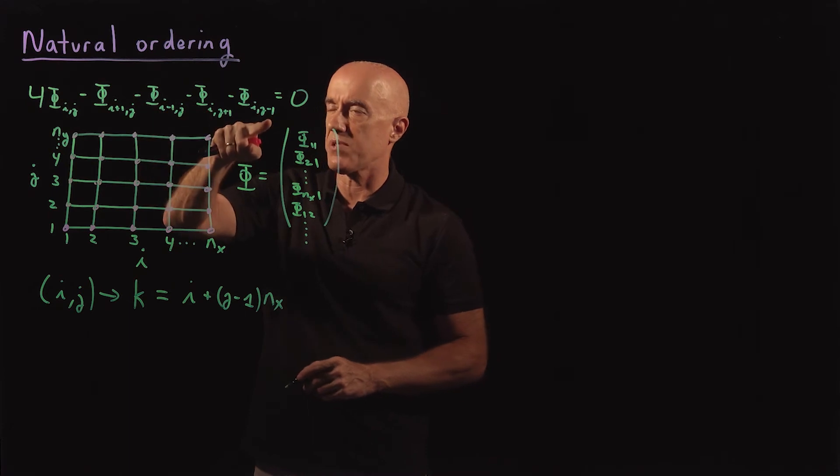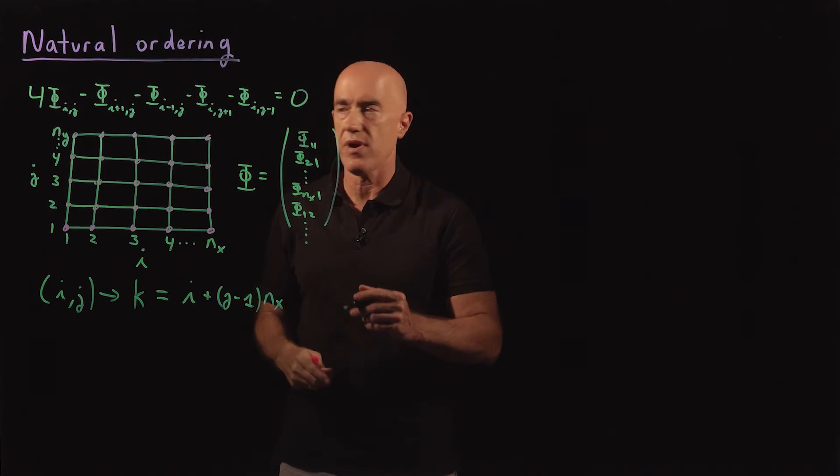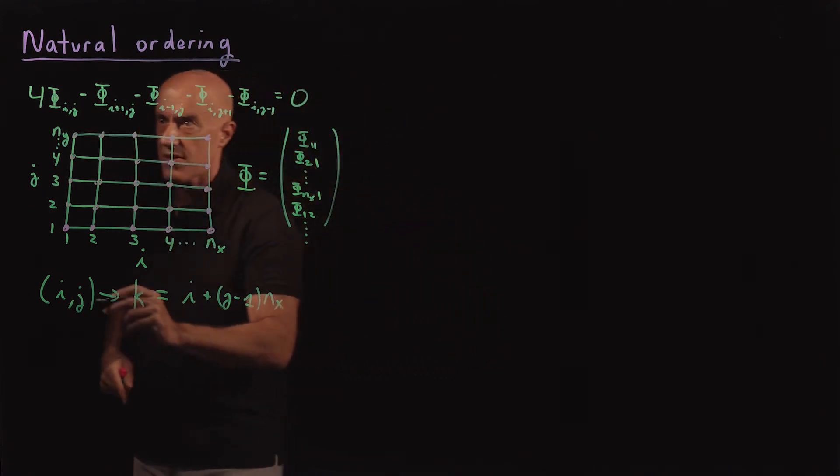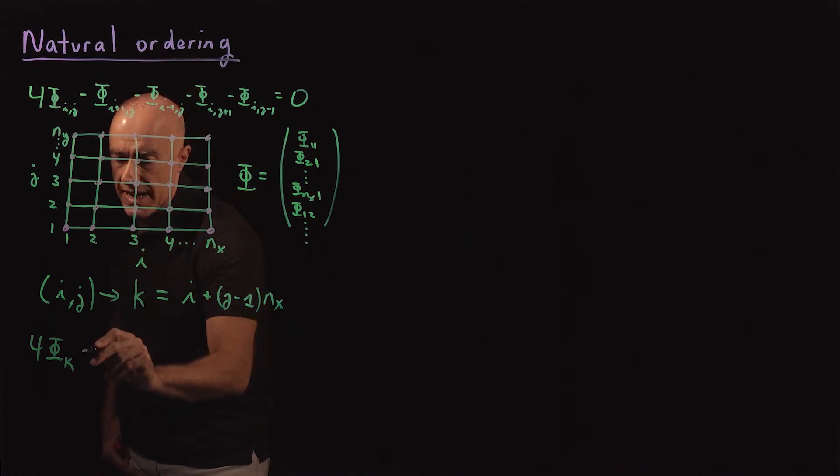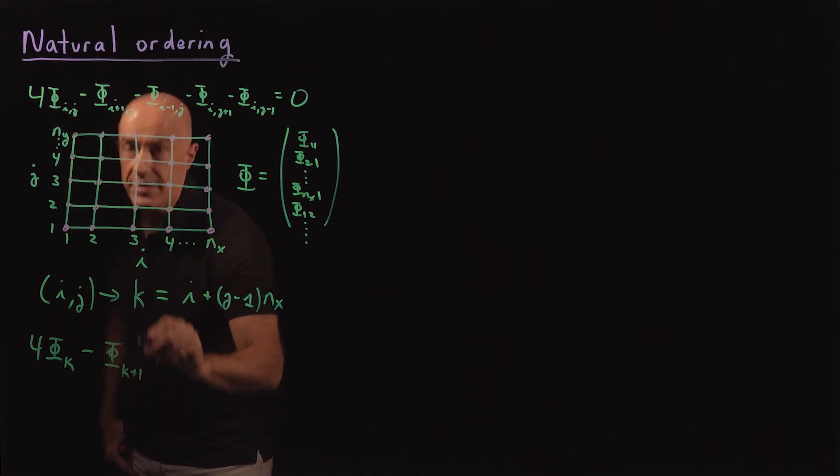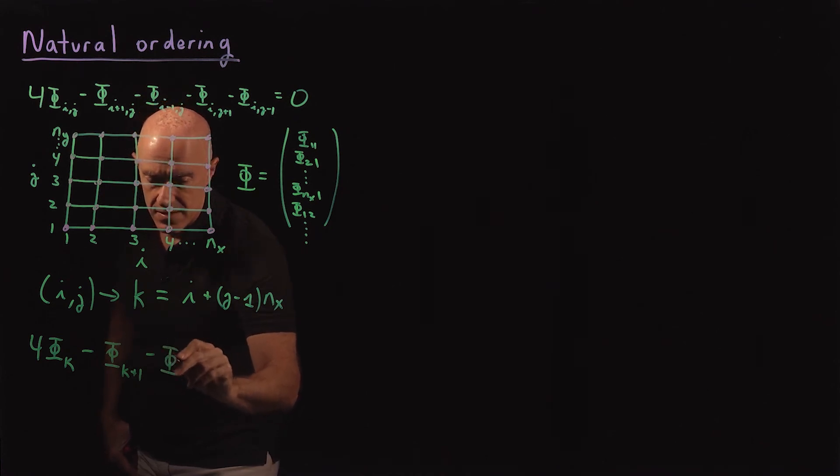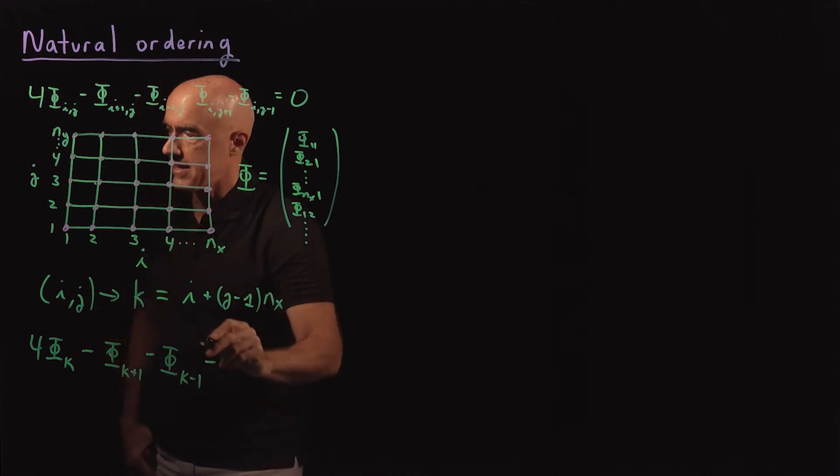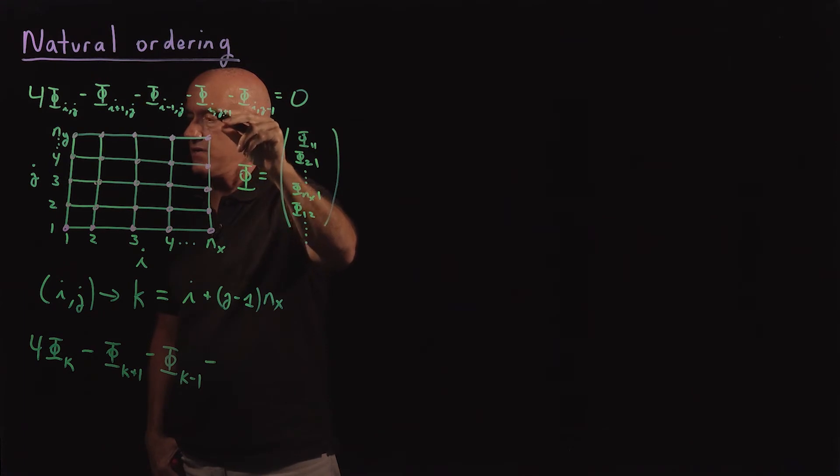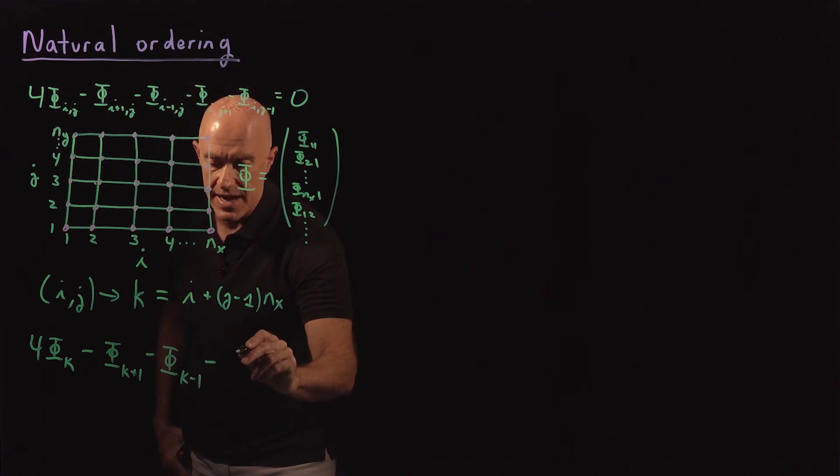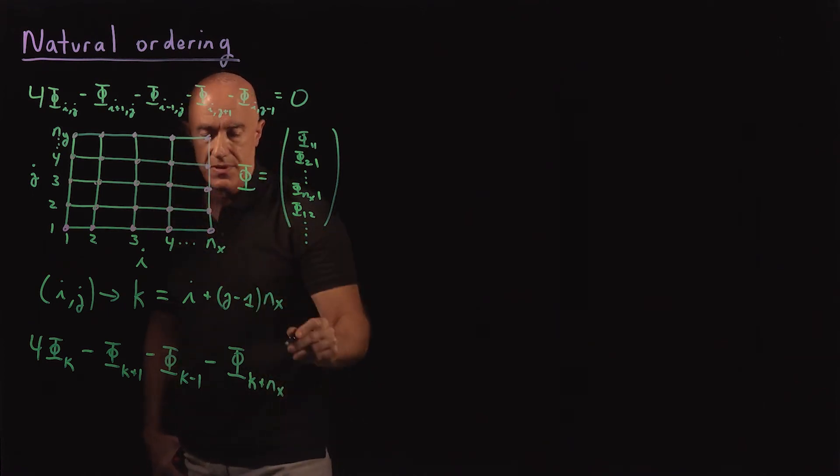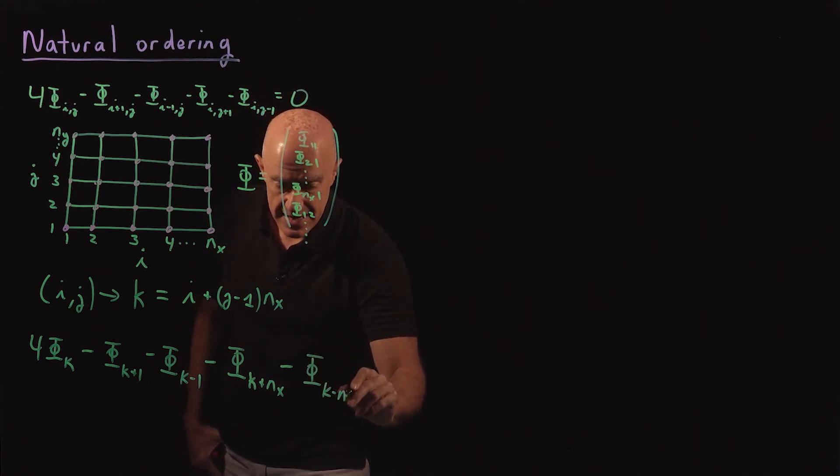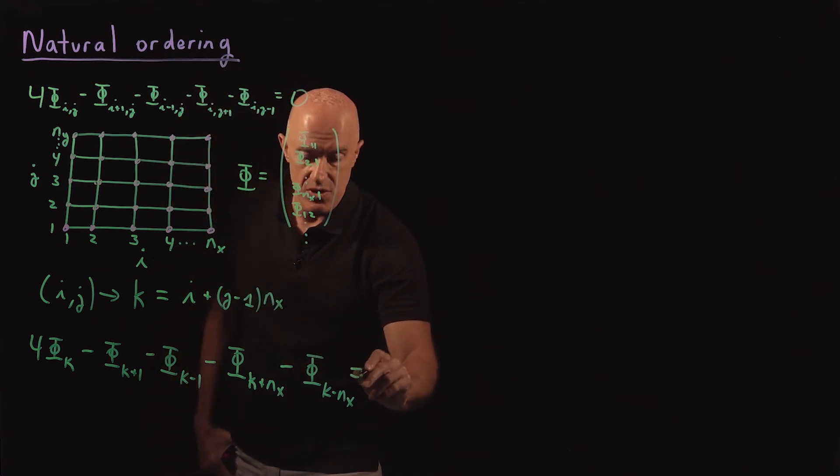So we convert the discrete Laplace equation with two indices to a discrete Laplace equation with one index. So that will become 4 times phi sub k. So i, j goes to k. And then minus phi k+1 here. Minus phi k-1 from the third term. Minus then i, j+1. So we're jumping rows here. So that would be minus phi k+nx, jumping one row up. Minus phi k-nx, jumping one row down, equals 0.